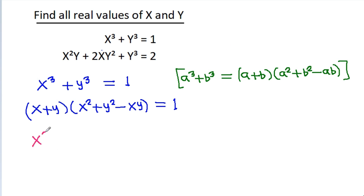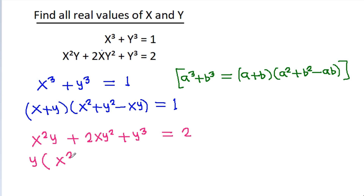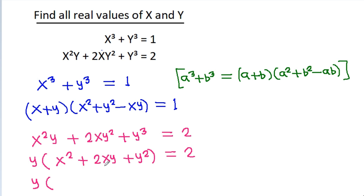We have x squared y plus 2xy squared plus y cubed equals 2. Taking y as a common factor gives y times (x squared plus 2xy plus y squared) equals 2, and x squared plus 2xy plus y squared is (x plus y) squared. So y times (x plus y) squared equals 2.